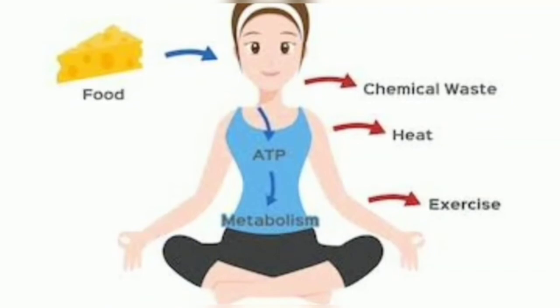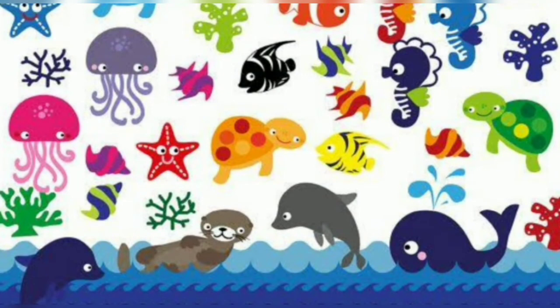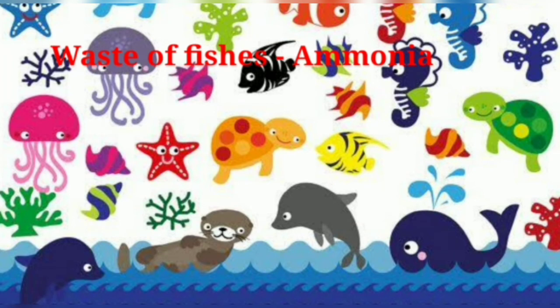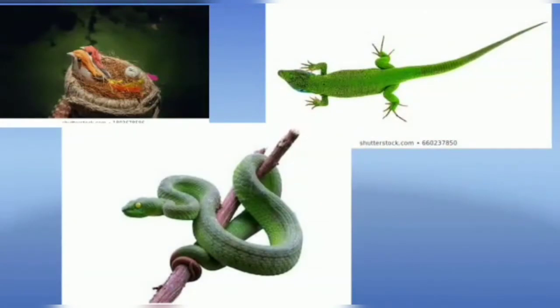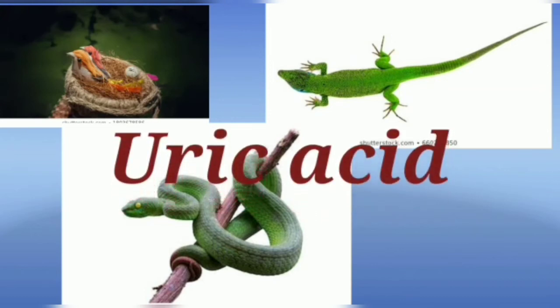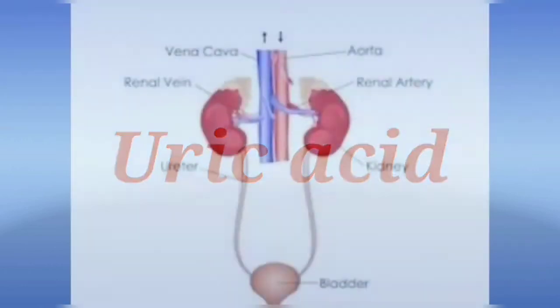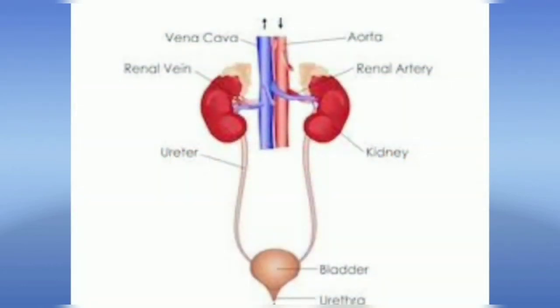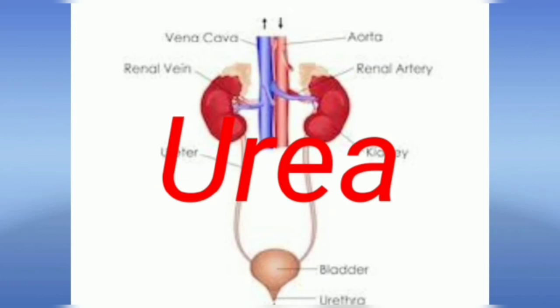The way waste chemicals are removed from the body of an animal depends on the availability of water. Aquatic animals like fishes excrete cell waste as ammonia, which directly dissolves in water. Some land animals like birds, lizards, and snakes excrete a semi-solid white colored compound called uric acid. The major excretory product in human beings is urea.